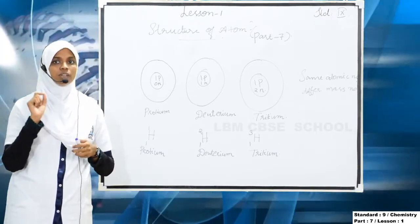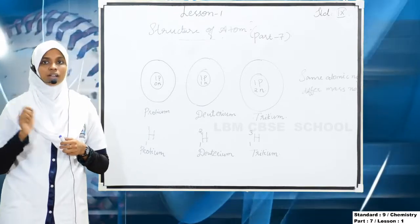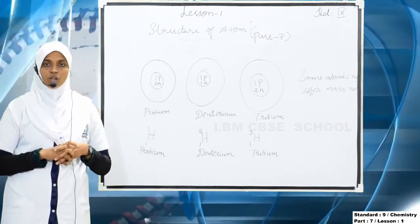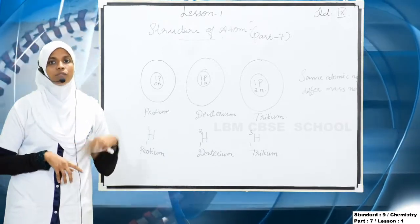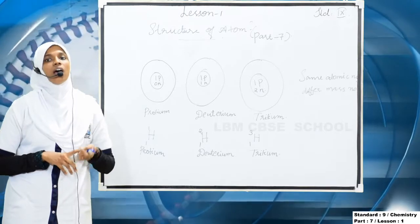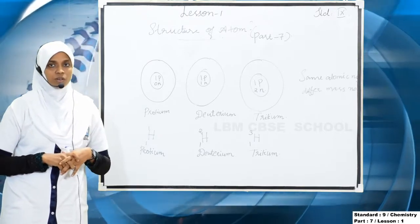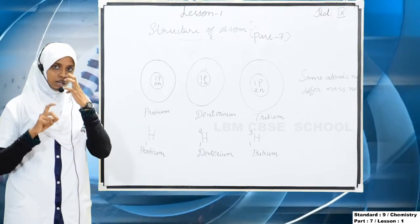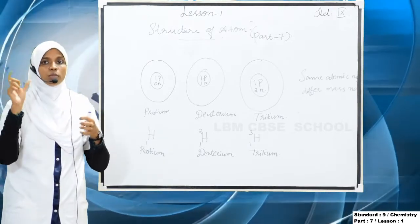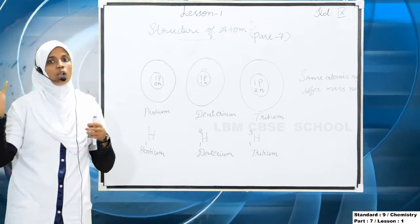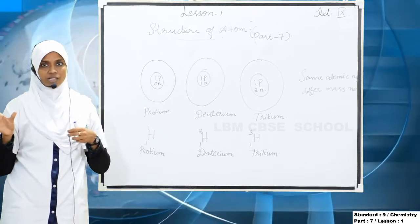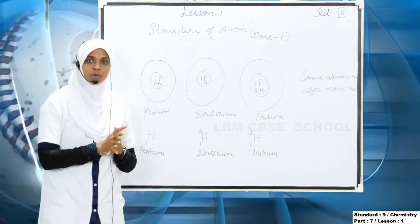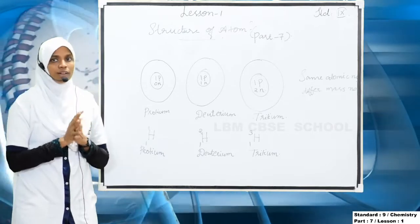First of all we write the electronic configuration, and using that electronic configuration we draw the Bohr model of the atom. We draw the orbits or shells according to the electronic configuration. In the previous class we discussed about that.